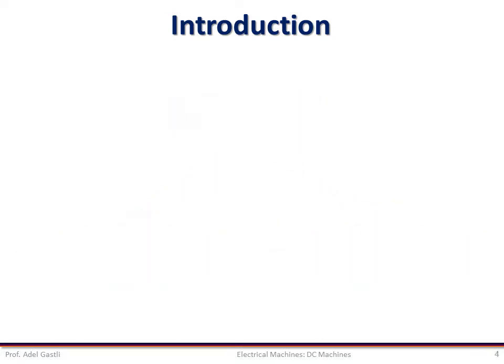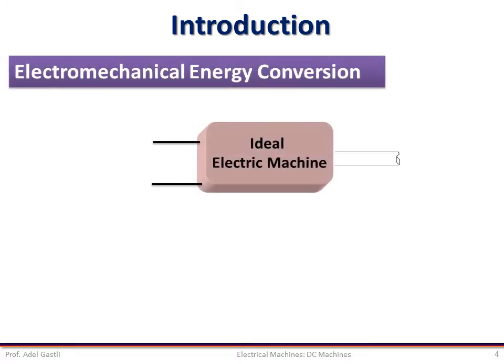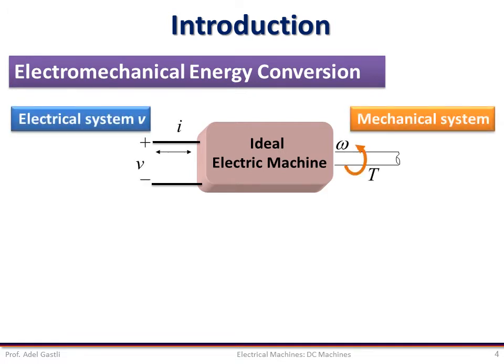The operation of rotating electrical machines is based on the principle of electromechanical energy conversion. The conversion takes place inside the machine where magnetic fluxes and forces are generated based on electromagnetic current and flux interaction. These forces are translated into torque on the shaft of the machine.